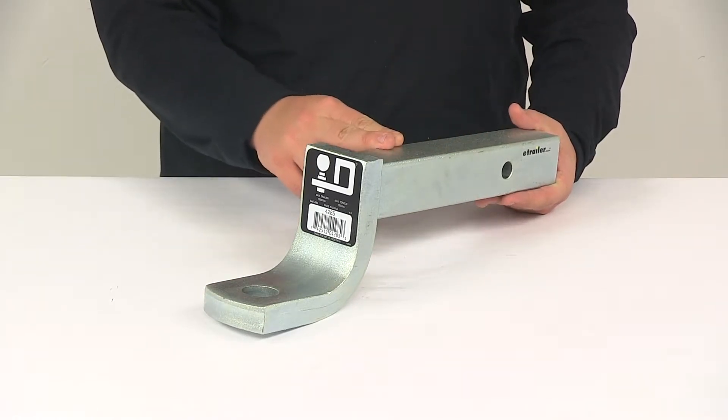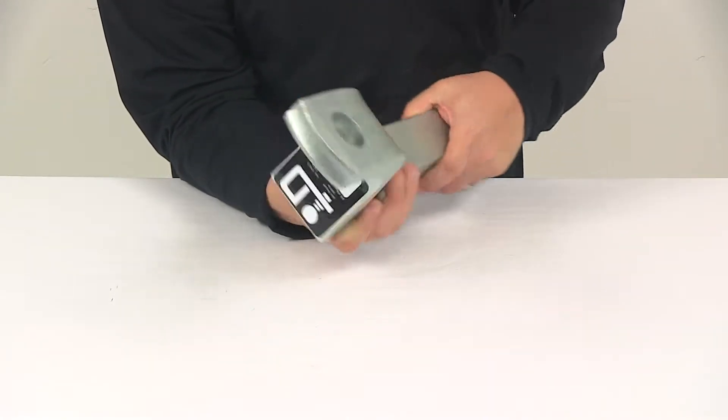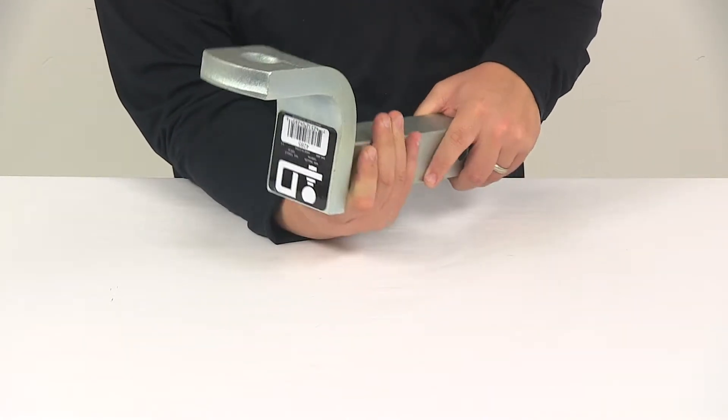Now with this particular ball mount, it can be used in either the drop or the rise position, so both are available to ensure level towing.